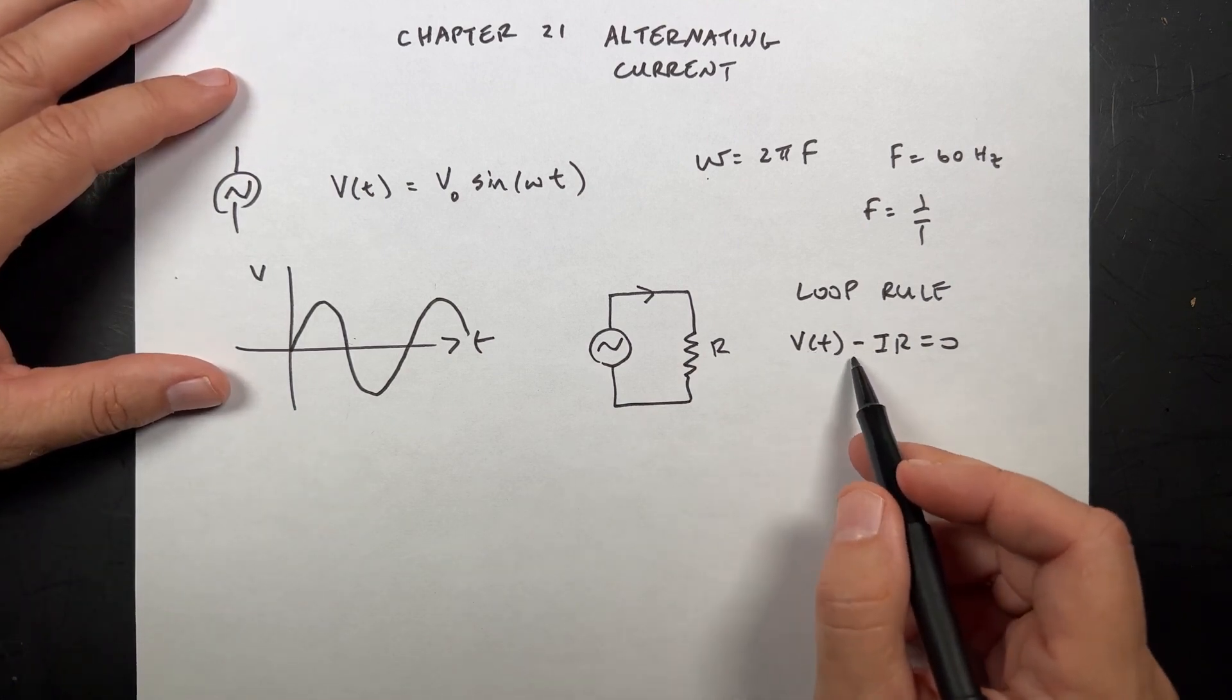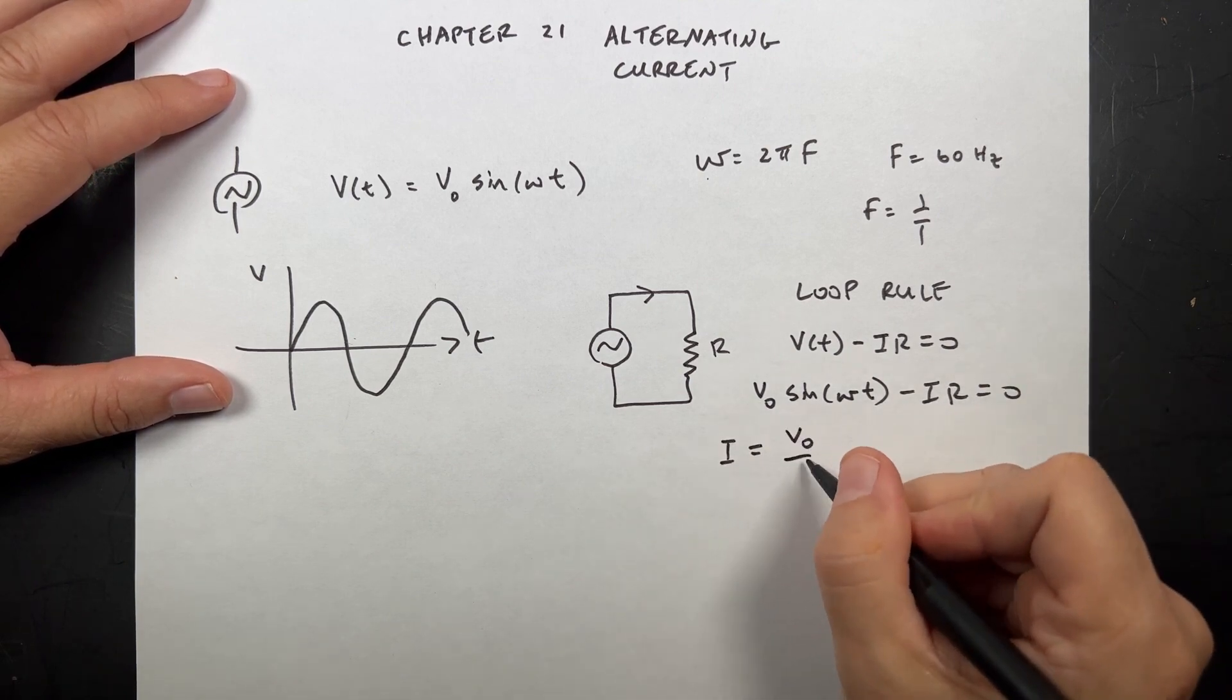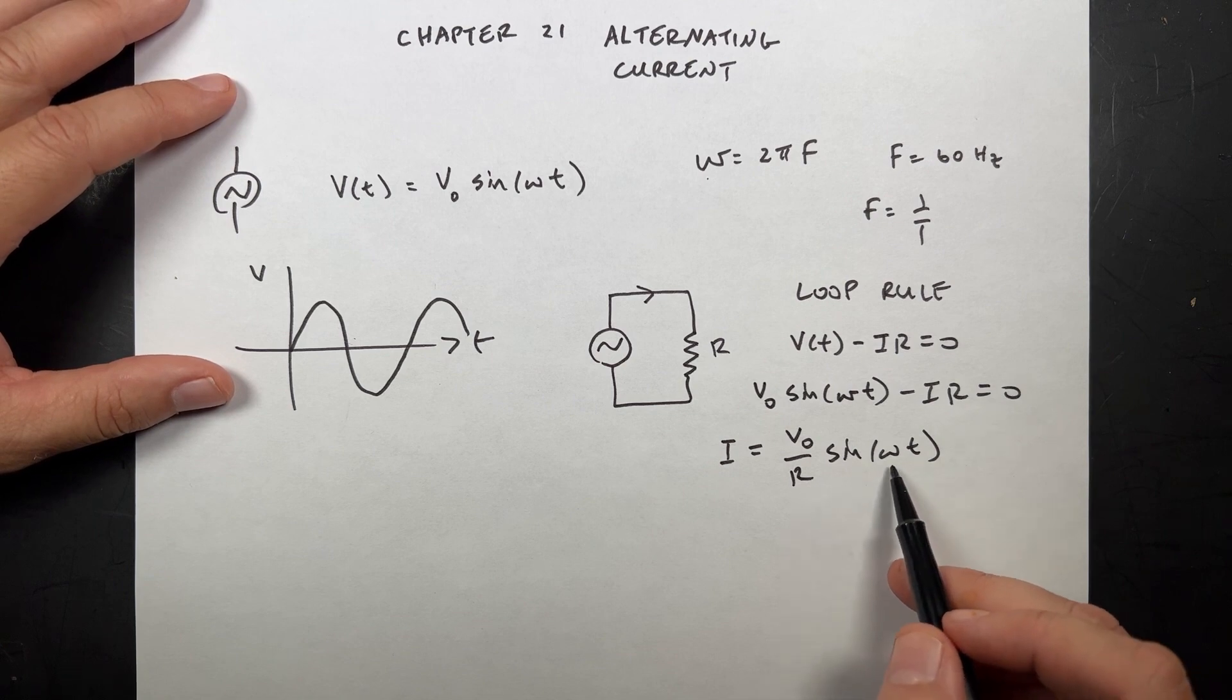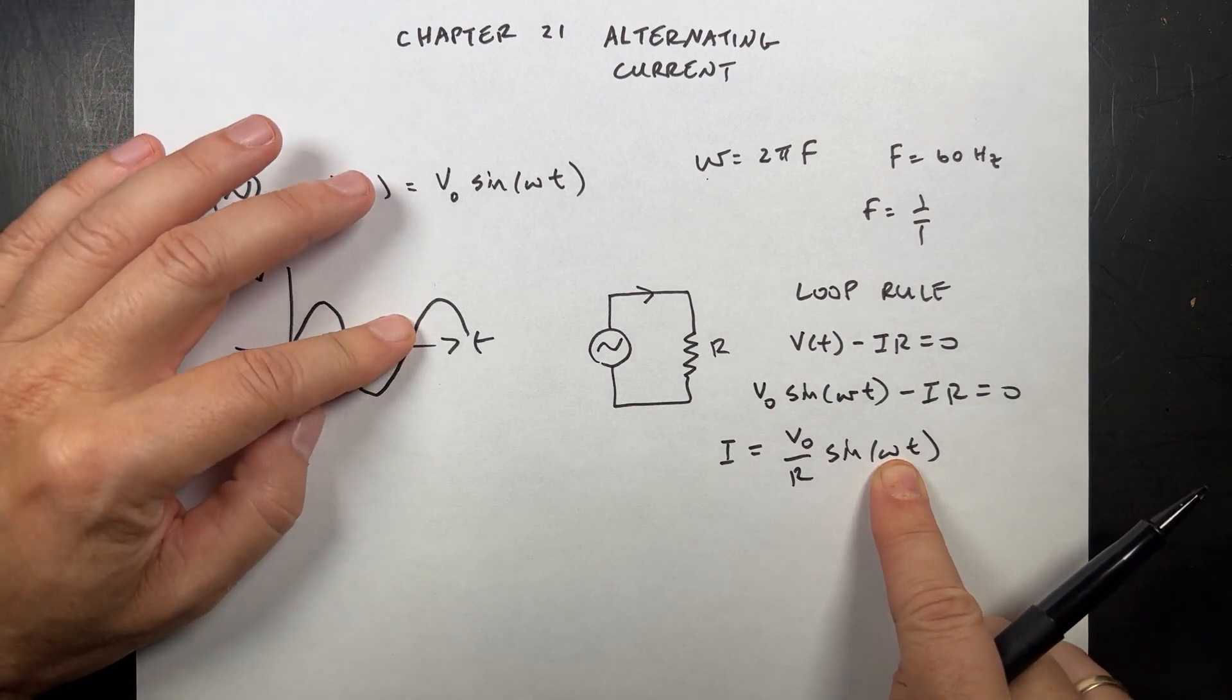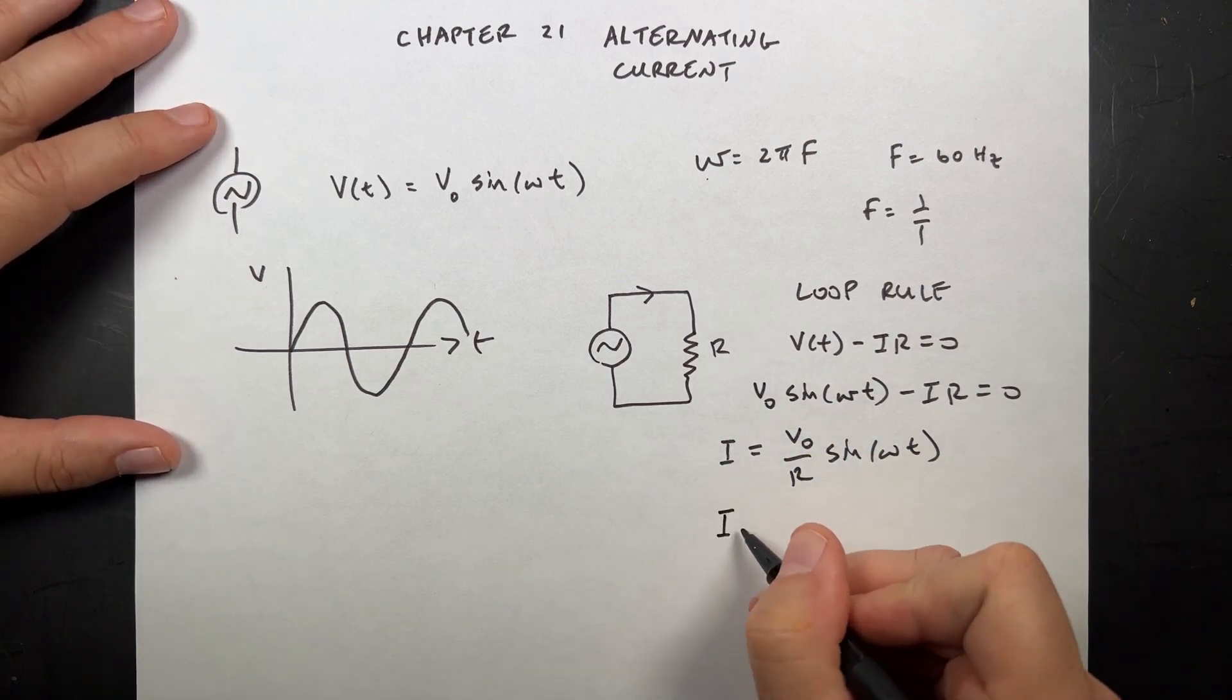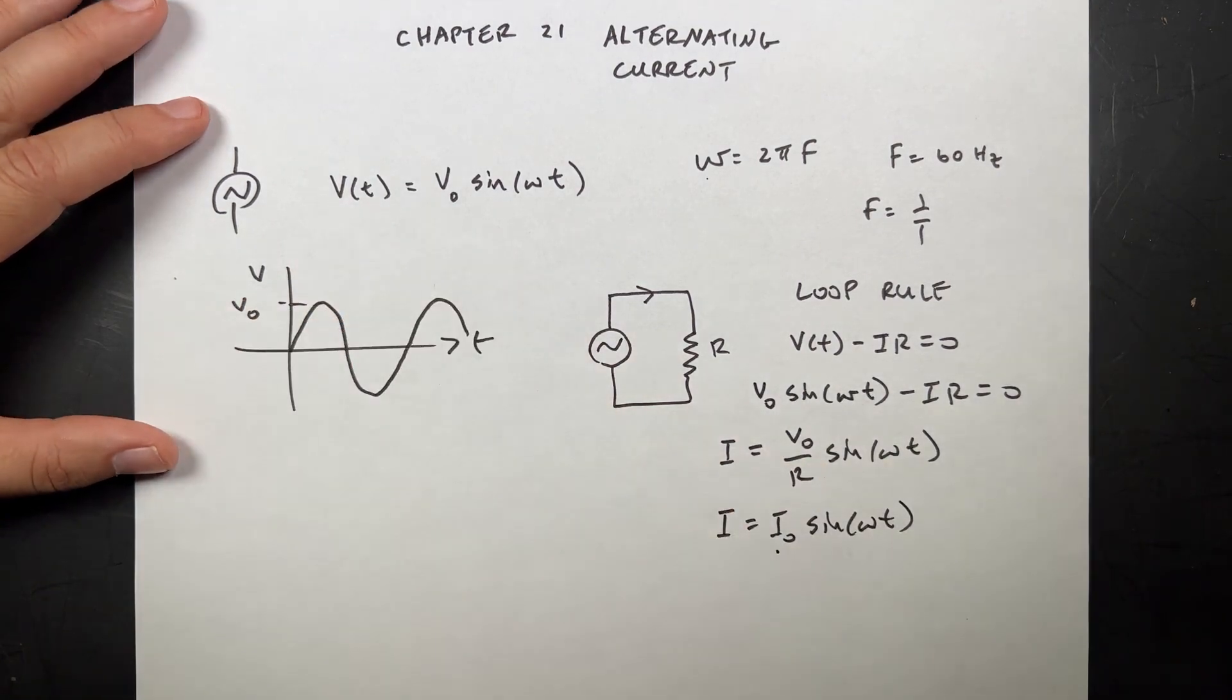And you see here that the only way for this to work is if I can put V₀ sine omega t minus IR equals zero. So I is V₀ over R sine omega t. But I has to change with time too. That's the only way for this to work. So we're going to get an oscillating current too. And it's going to have the same frequency, and it's going to have this V over R. And we can write this as I equals I₀ sine omega t. So I₀ is the maximum current. V₀ is the maximum voltage.